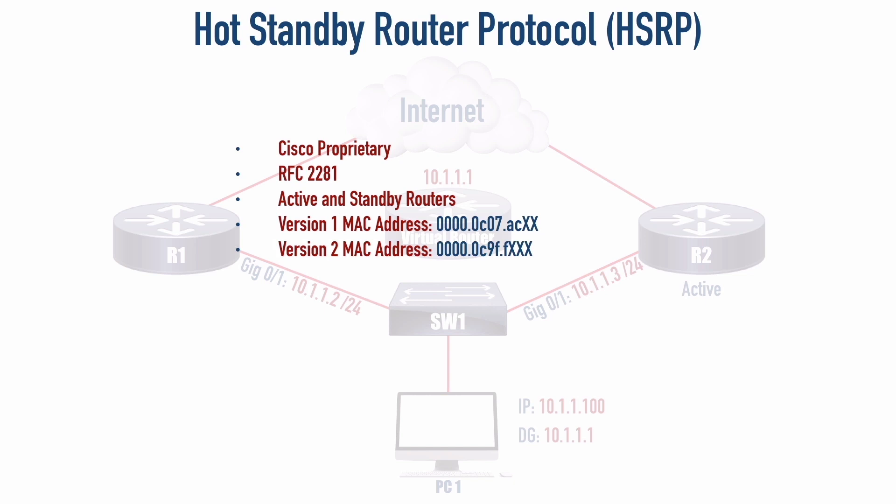One of the advantages of version 2 versus version 1 is that we could have sub-second timers — hello timers in the milliseconds. For example, 300 millisecond hello timers and a hold time of 900 milliseconds. So on a really fast network that's typically very reliable, we could have very fast switchover.